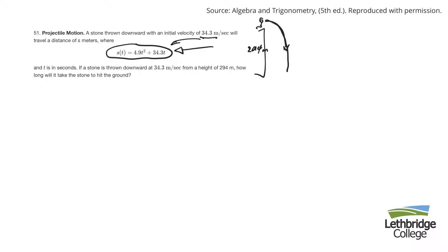So S of T, that there is the distance. T stands for time. And S of T would be the distance after a certain length of time. I'm wanting to know how long it takes for the thing to hit the ground if I'm throwing it from 294 feet. So this has to be my distance. I'm plugging that in there. So I'll have 294 equals 4.9T squared plus 34.3T.